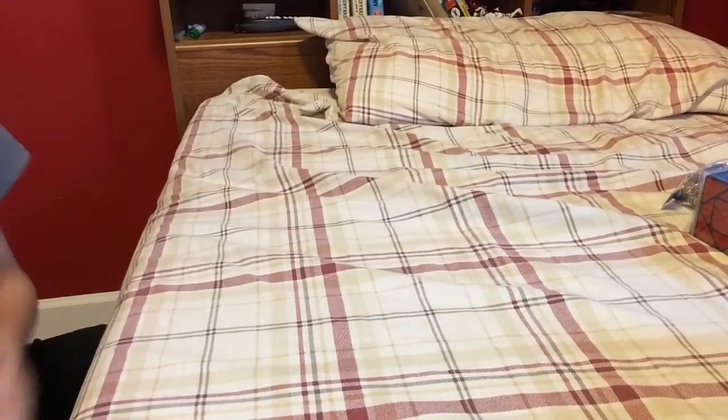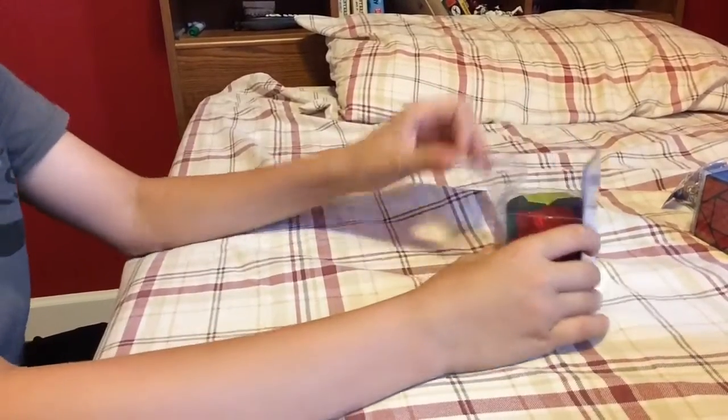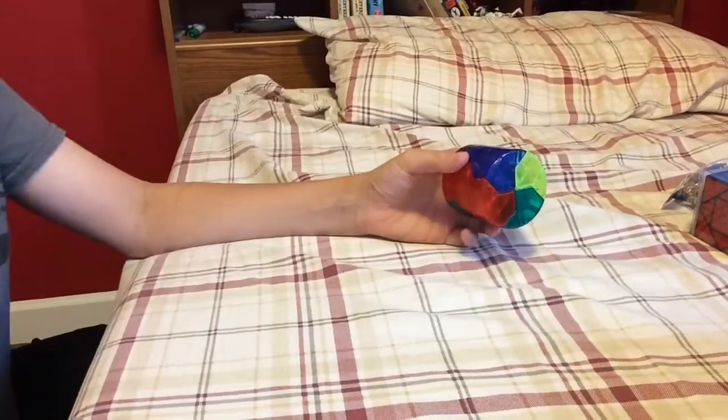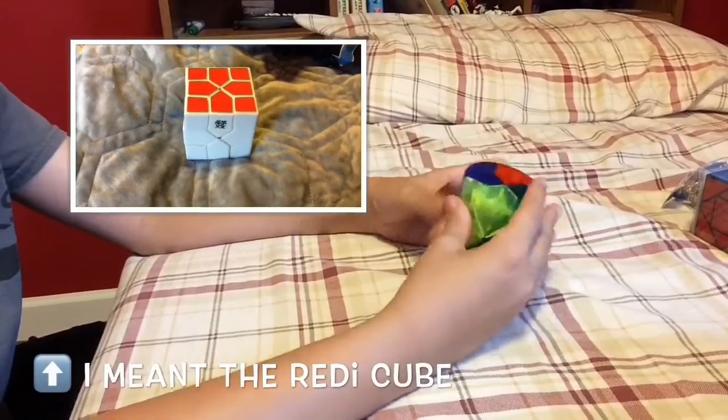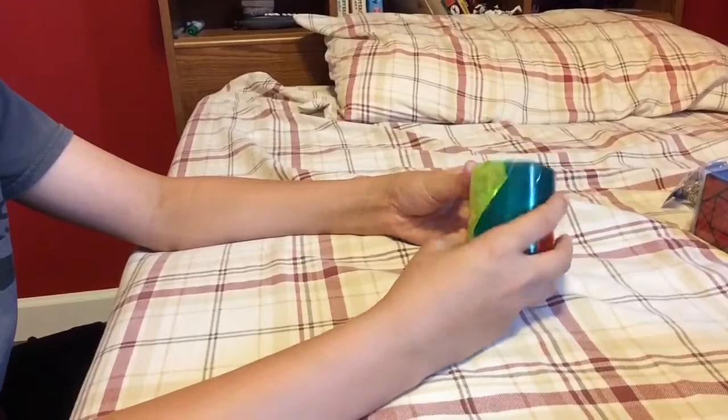Next up is the MoYu Ready Barrel. Now this is interesting. Now I've shown you the barrel cube in the show and tell episode and I also unboxed the Dino Cylinder. This is the basically the Dino Cylinder, but it's the Ready Cube.